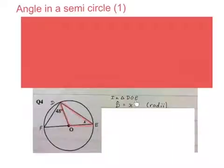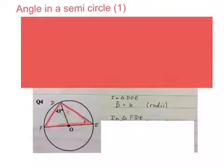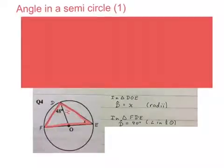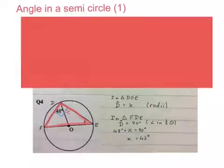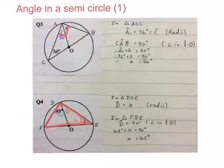Now let's see what we write. I started in triangle DOE, that whole red triangle, I said angle D is equal to X because of the radii. Then I wrote in triangle FDE, this red one that you see now, angle D equals 90 degrees, angle in half a circle. Then I wrote 48 degrees plus X equals 90 degrees, then the answer is X equals 42 degrees if you minus the 48 from the 90. Please stop the video and make sure you understand what I wrote.